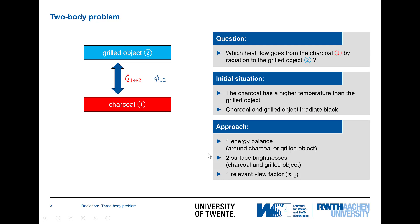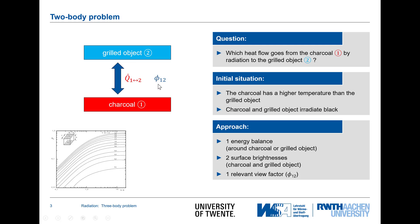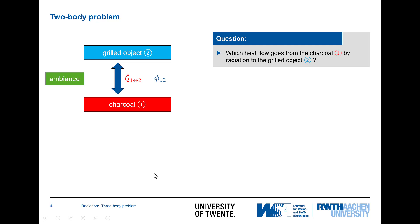The procedure to solve that is: I need one energy balance. I do that either around the grilled object or the charcoal. I need to define both of the surface brightnesses, and I need to determine a relevant view factor. I can determine this by geometrical considerations, as we have done in our view factor video, or I can make use of the diagram which is in the lecture notes, and then go into the graph and determine the view factor from there.